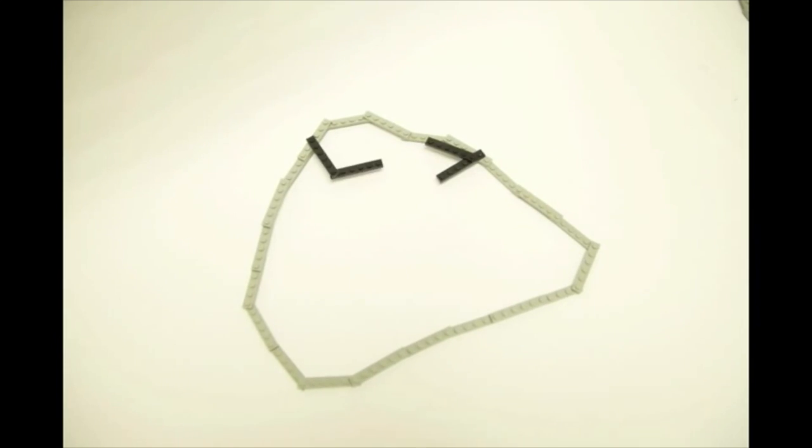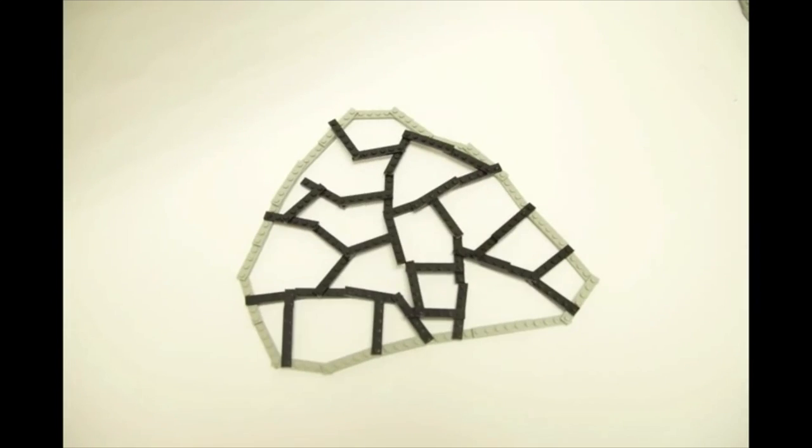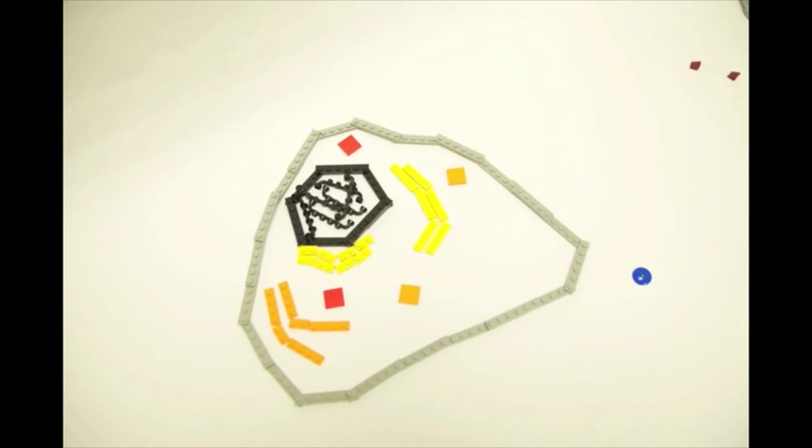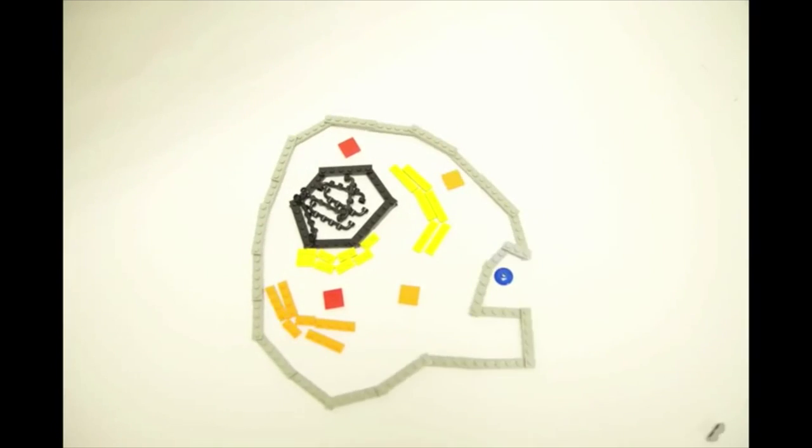Eukaryotes have a skeleton, called a cytoskeleton, that gives them their shape and allows them to move. They have internal structures, called organelles, that help them to process food, excrete wastes, and respond to their environment.